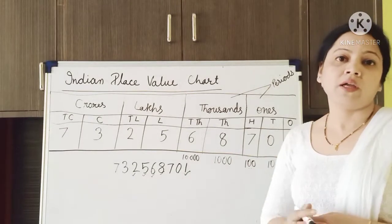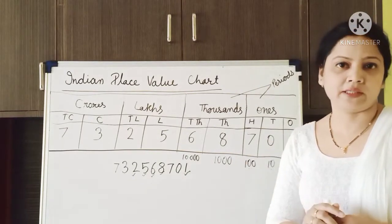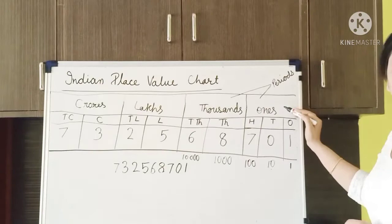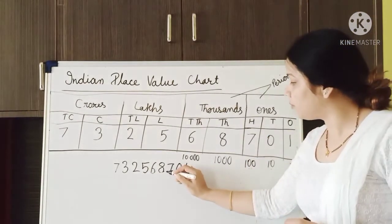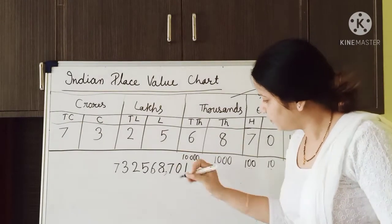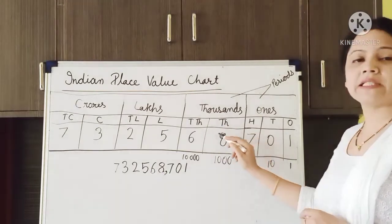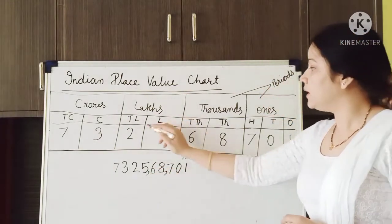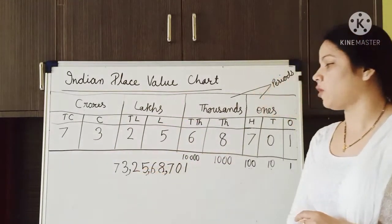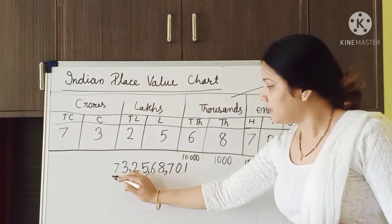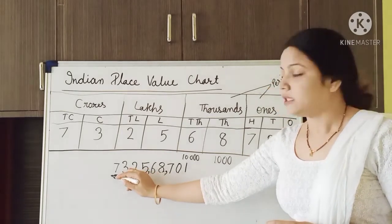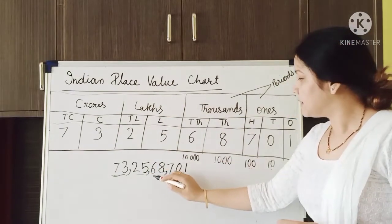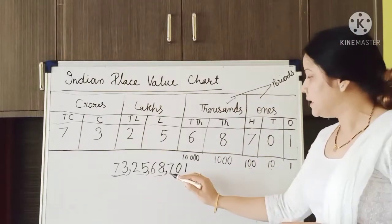Now, where do we put the comma? We put the comma in between the periods, starting from the right-hand side. There are 3 places in the ones period, so after 3 digits we put one comma. The thousands period has 2 places, so after 2 digits we put another comma. Lakhs also has 2, so we put another comma. Now we can easily read this: 73 crores, 25 lakhs, 68,701.